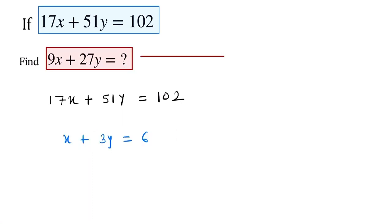Now we focus on this part of the question: 9x plus 27y. We have to find the value of this one. Here we take the common 9 because 27 is the multiple of 9. When we take the common 9, here is x plus 3y.